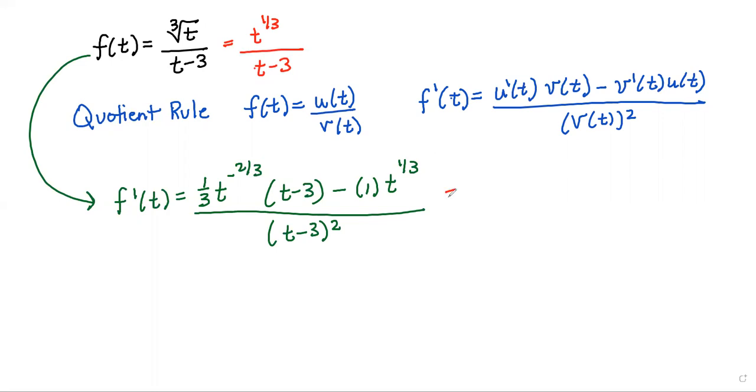Okay, so first let's go ahead and distribute the left term, the 1/3rd t to the minus 2/3rds, distribute over t minus 3. Let's just see if that helps us out. If we do that, we'll get 1/3rd, and then t to the 1/3rd, and let's get my pen to work here. There we go.